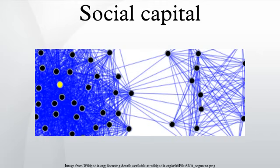Bonding refers to the value assigned to social networks between homogeneous groups of people, and bridging refers to that of social networks between socially heterogeneous groups. Typical examples are that criminal gangs create bonding social capital, while choirs and bowling clubs create bridging social capital.